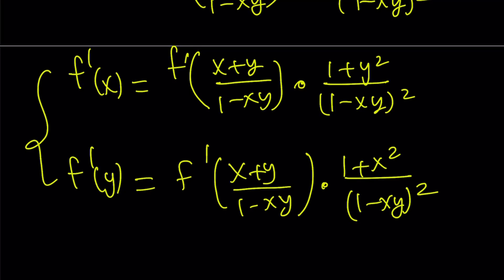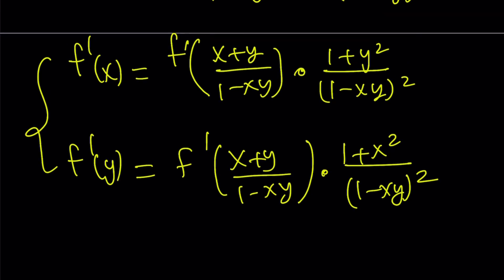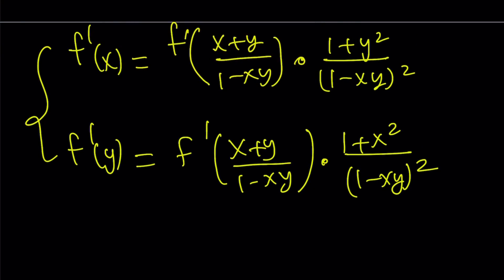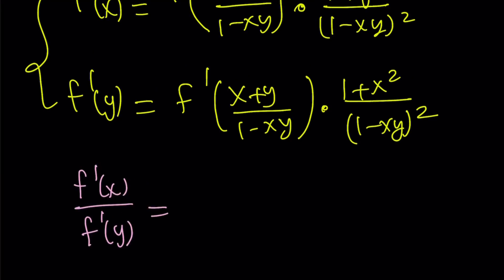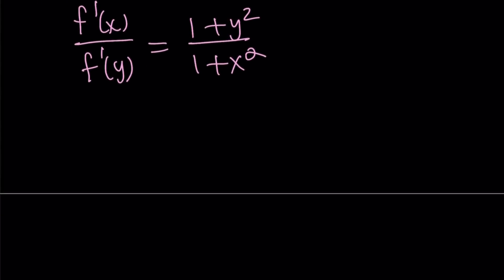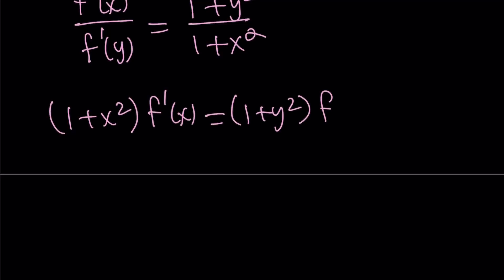We have these two expressions, and why not divide these equations side by side? The motivation is that a lot of things look similar, so when we divide, many things will cancel and we'll end up with a simple expression. After dividing, we get f prime of x divided by f prime of y equals one plus y squared divided by one plus x squared. We then cross multiply to get one plus x squared times f prime of x equals one plus y squared times f prime of y.